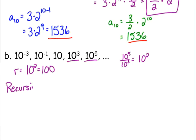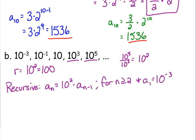So our recursive rule is a sub n is equal to, I'm going to put the common ratio in front this time and I'm going to leave it as 10 squared just because that's kind of how the terms in my sequence are written. Times a sub n minus 1 for n is greater than or equal to 2. And a sub 1, our first term, is 10 to the negative 3rd.